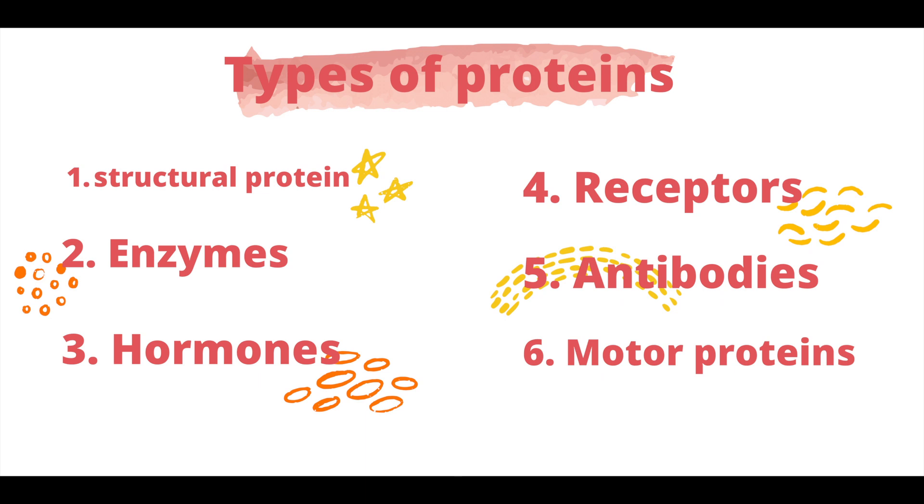Next we have antibodies, also known as immunoglobulins. They bind to antigen proteins and target them for destruction, working in our immune system to keep us safe from foreign bodies.